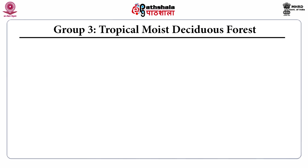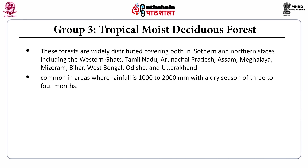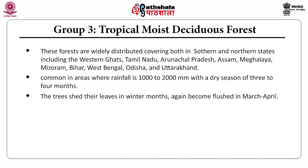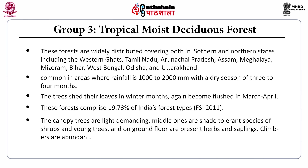Group 3, the tropical moist deciduous forests, are widely distributed covering both southern and northern states, including the Western Ghats, Tamil Nadu, Arunachal Pradesh, Assam, Meghalaya, Mizoram, Bihar, West Bengal, Odisha, and Uttarakhand. These are common in areas where rainfall is 1000 to 2000 mm with a dry season of 3 to 4 months. The trees shed their leaves in winter months and become flushed again during March and April. These forests comprise 19.73% of India's forest area according to the FSI report 2011.